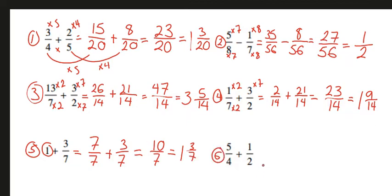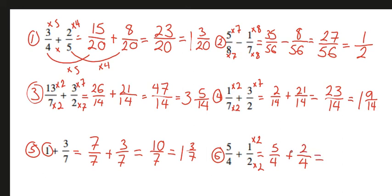Number 6, our last question, is 5 over 4 plus 1 over 2. The least common denominator is going to be 4. For the first fraction, we do not have to change a thing, so it will be 5 over 4. For the second fraction, to get from 2 to 4, we have to multiply by 2. And what we do to the bottom, we also do to the top. 1 times 2 is 2. Now that we have the same denominator, we can add the numerators. 5 plus 2 is 7 over 4. 4 goes into 7 one time, and there will be a remainder of 3 out of 4.